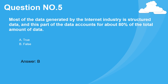Question 5. Most of the data generated by the Internet industry is structured by large systems, which is structured data, and this part of the data accounts for about 80% of the total amount of data. A. True. B. False. Answer: B.